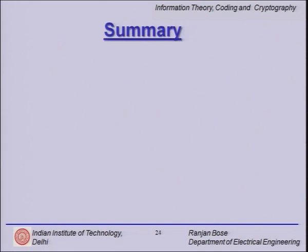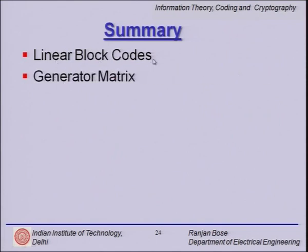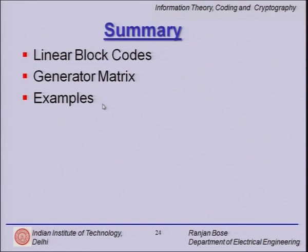We now come to the summary of today's lecture. We had a quick recap about linear block codes, then moved on to the interesting concept of the generator matrix and why it is an efficient way to represent linear block codes. We also looked at examples verifying whether codes satisfy the properties of linear block codes and how a simple generator matrix can generate a code.